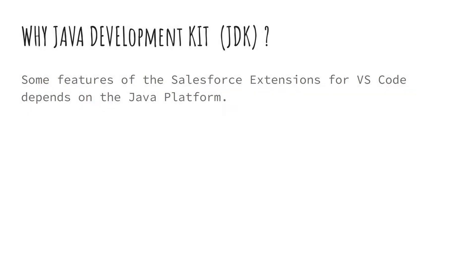You must be thinking if we are going to write code in Apex, which, if you are not aware, is a language similar to Java, using which we can write code for Salesforce platform development — why are we installing JDK, which stands for Java Development Kit? Well, that is because in order to extend the functionalities of our IDE, in this case VS Code, we are going to install a few extensions. Extensions for an IDE are like applications for your smartphone — they basically intend to serve a specific purpose by extending the features of your phone. Some of these Salesforce extensions for VS Code require the Java platform.